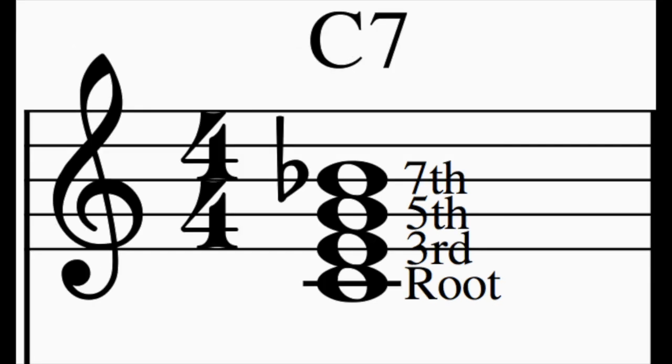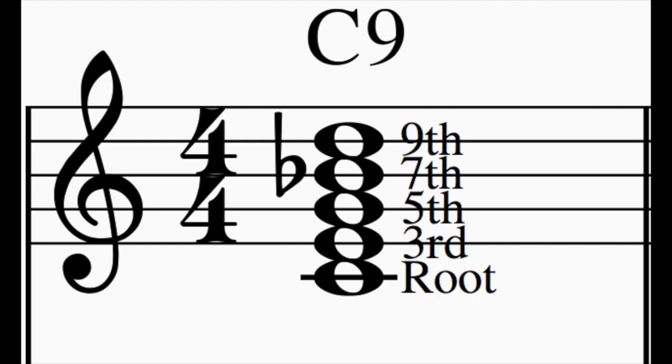So let's say we have a C7 chord, and we want to make it a C9 chord. We simply add the nine.